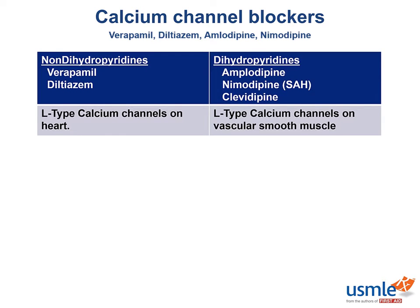The main difference between the dihydropyridines and non-dihydropyridines is that the dihydropyridines block the calcium channels on smooth muscles, while the non-dihydropyridines tend to favor calcium channels on the heart. Let's talk mechanism of action first.